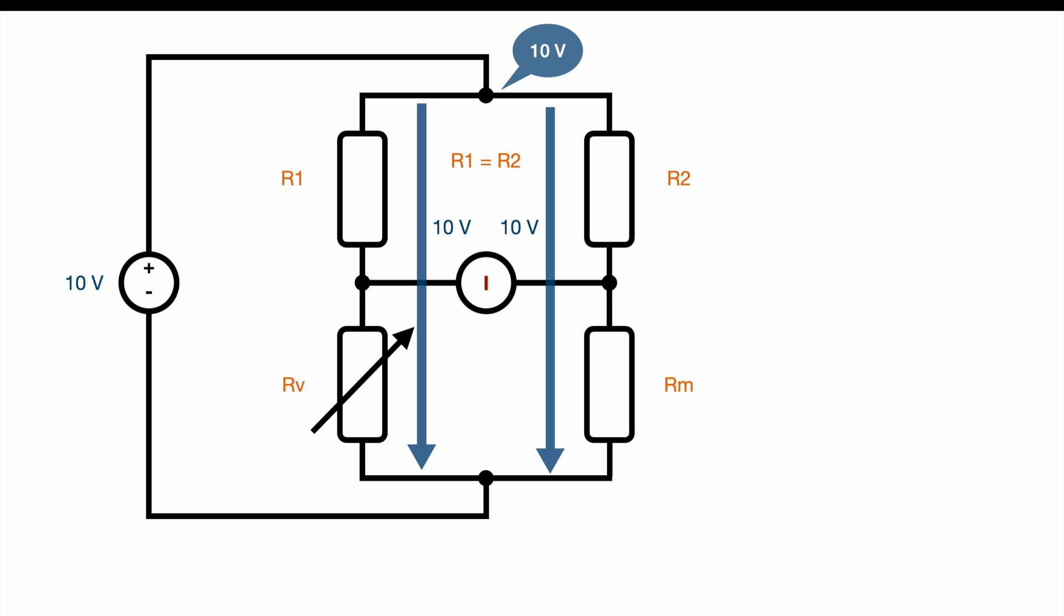This means that we have a potential of 5 volts on the left hand and 5 volts on the right hand, assuming RV and RM are the same size. Since we have the same potential on both sides of the amp meter, this results in a current of zero amps.